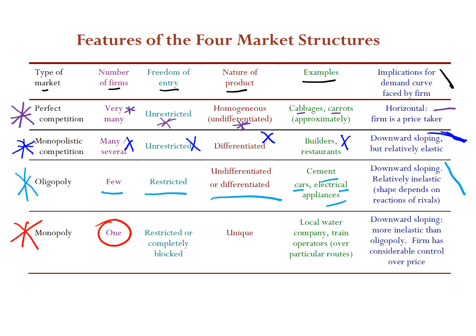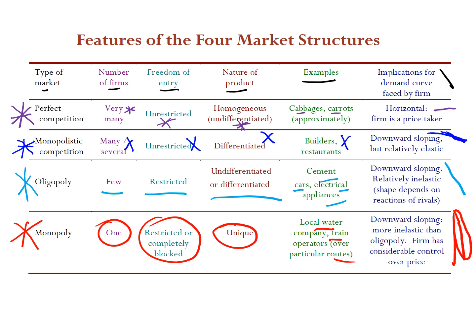Sometimes the government simply grants the contract to just one firm — think of your local water company or train operators on particular routes. Only one firm has the licence, so access is completely blocked for everyone else. The product is very unique, and the demand curve is more inelastic than oligopoly — very, very inelastic, almost vertical.